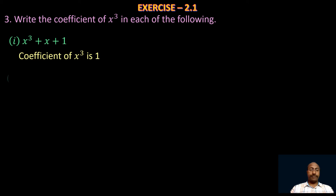Take the second one: 2 − x³ + x². Here we need the coefficient of x³. The second term is −x³, which can be written as −1·x³. So the coefficient of x³ in the given polynomial is −1.